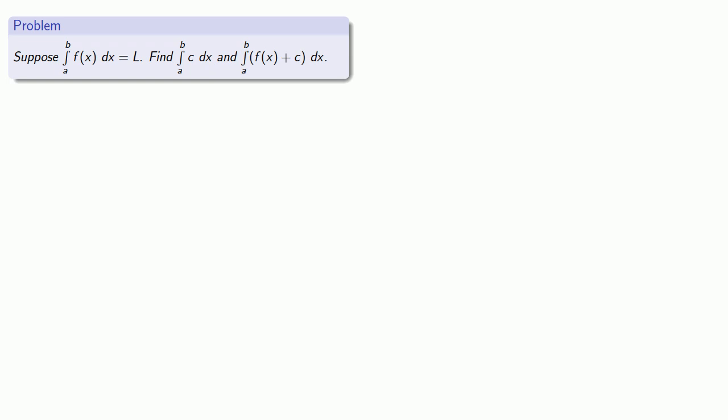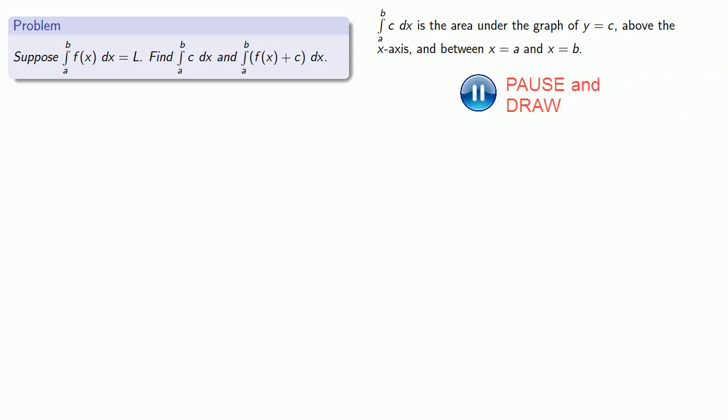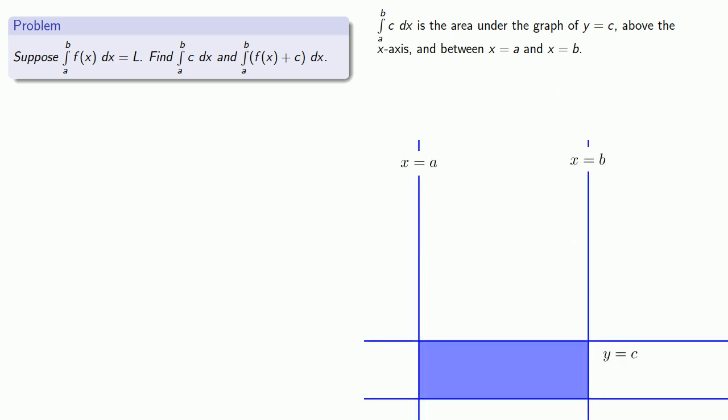Let's consider another situation. First, we want to find the value of the integral of a constant over the same interval. The definite integral from a to b of c dx is the area under the graph of y equals c, above the x-axis, between x equals a and x equals b. This is a rectangle with height c and width b minus a, so its area is c times b minus a.